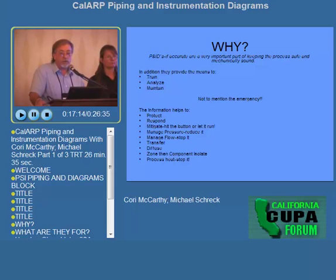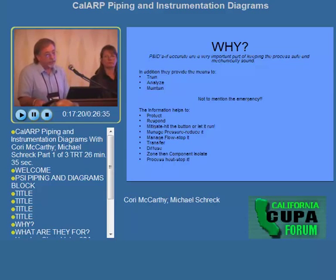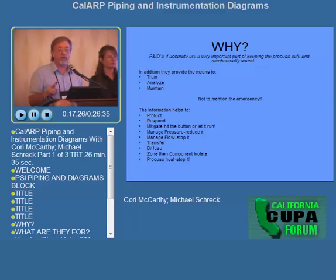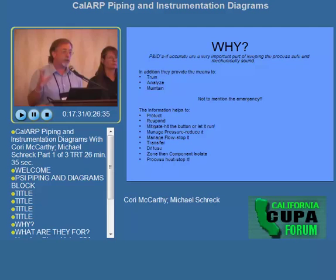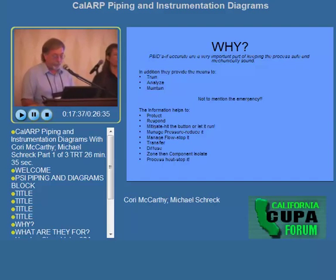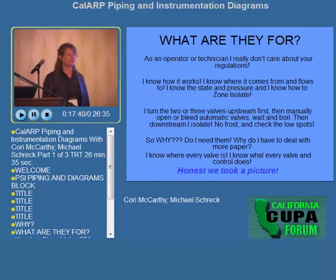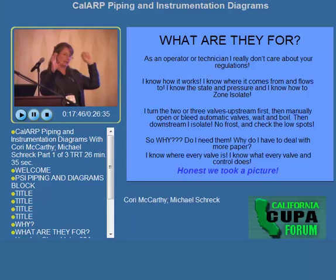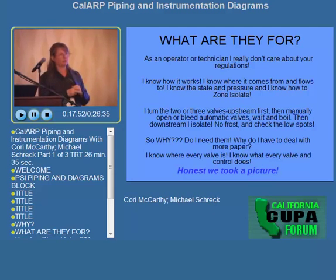A good example was the Shamrock Foods incident in Phoenix, Arizona around 2007. They sent the fire department in four times to turn two valves — the wrong valves each time — because the P&IDs were not updated and the valves were not tagged nor were the pipes labeled. The information given to the fire department was 'close valves connected to a white tank and a green tank,' but there were at least four white tanks and four green tanks in that engine room.